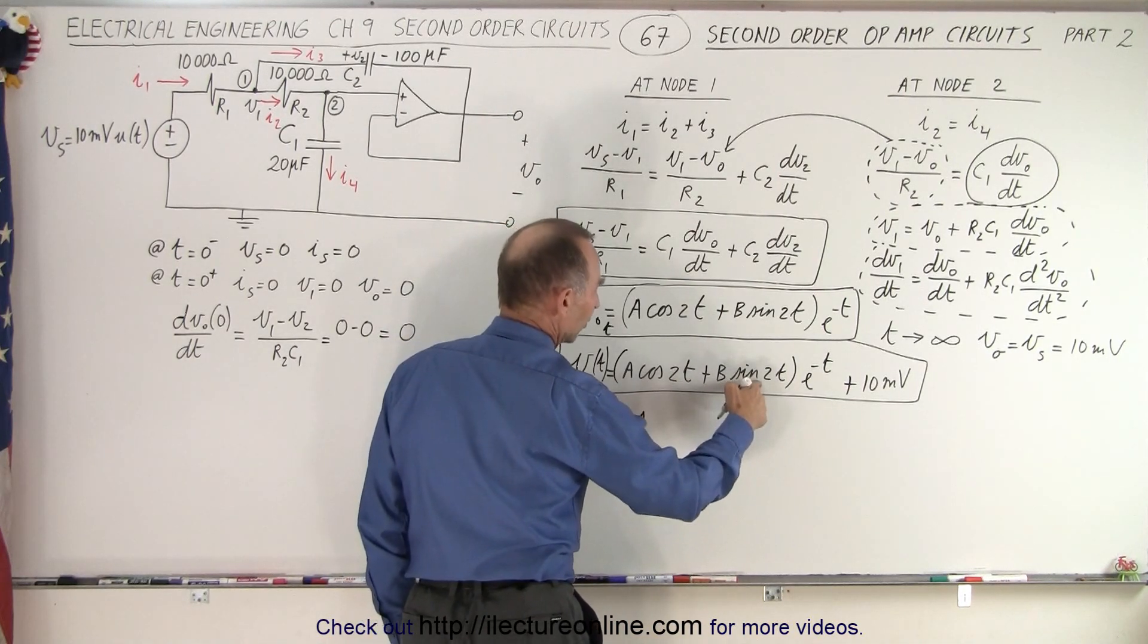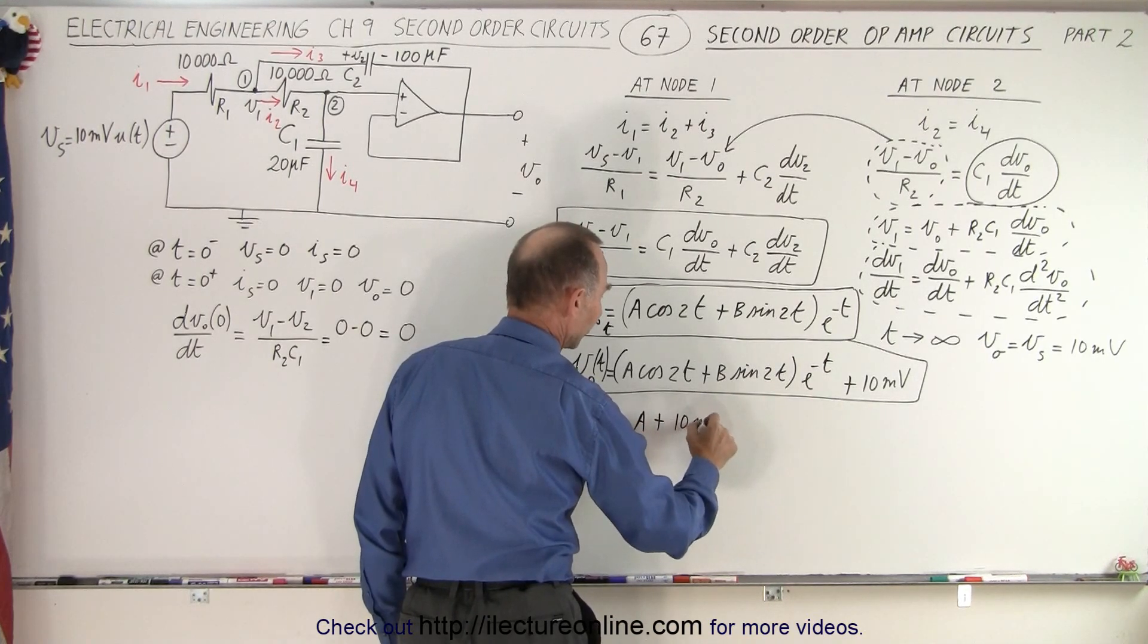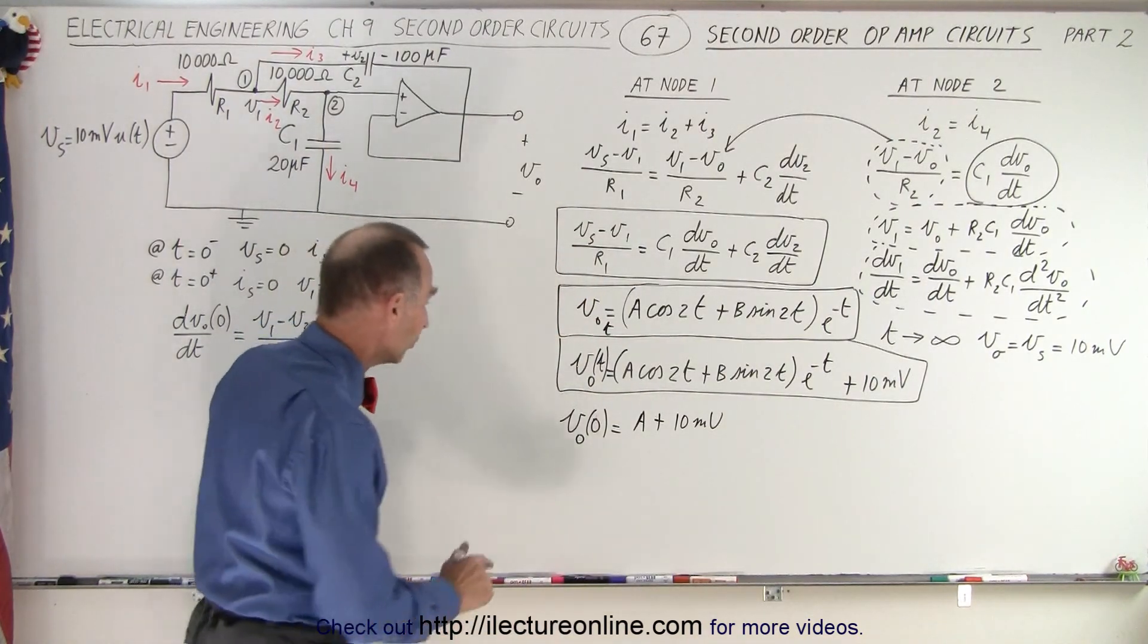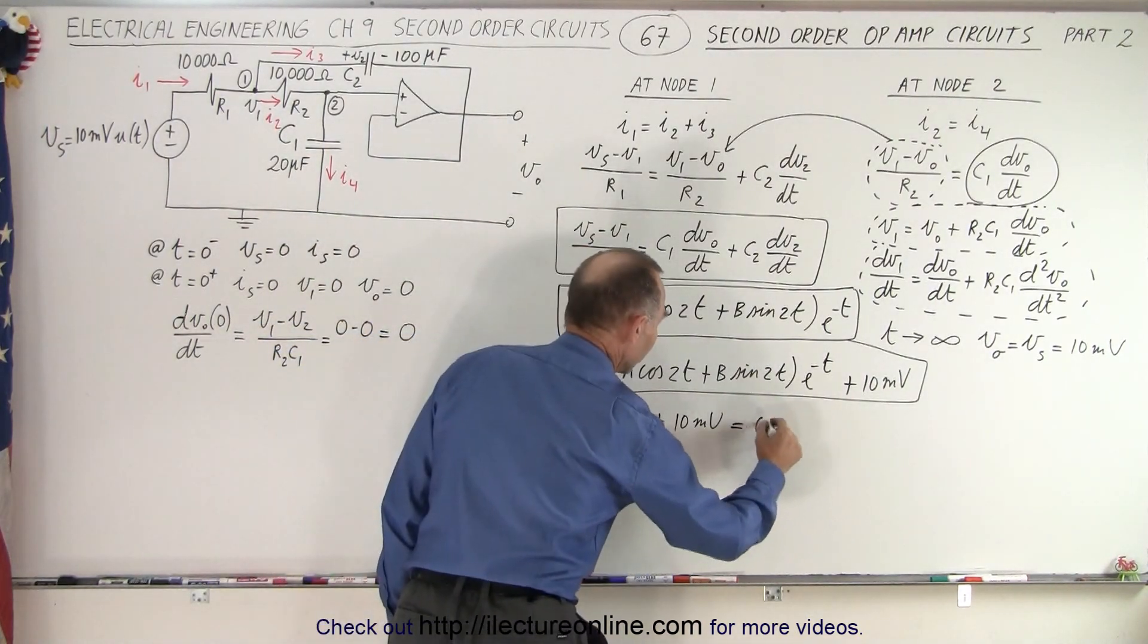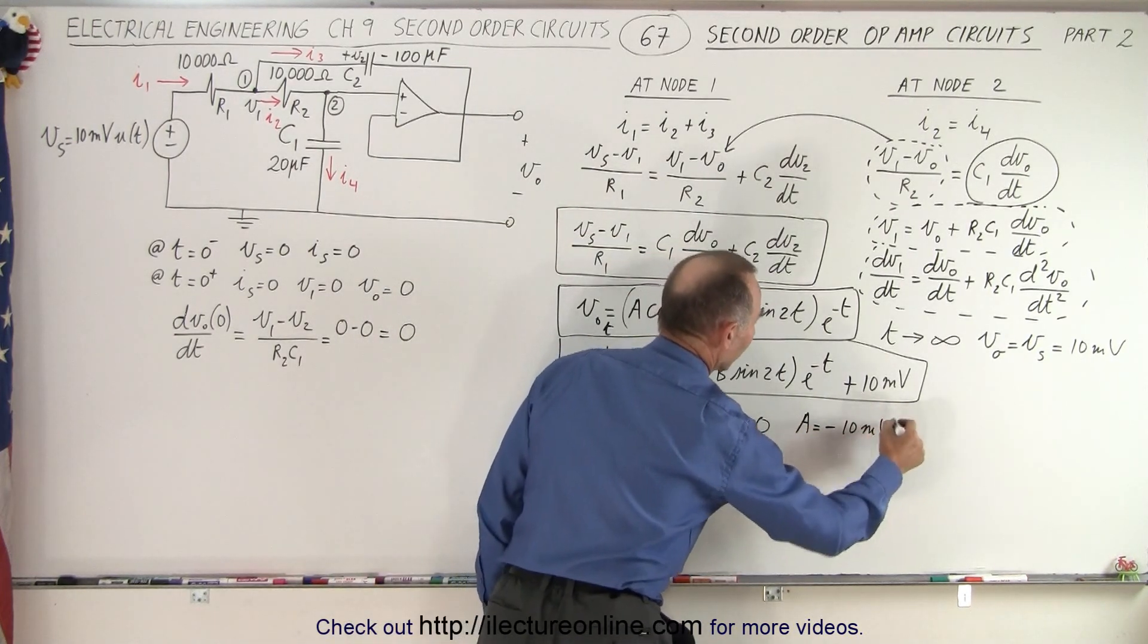And I put down the units millivolts so we don't get confused. We know that this is equal to 0, which means that A is equal to minus 10 millivolts.